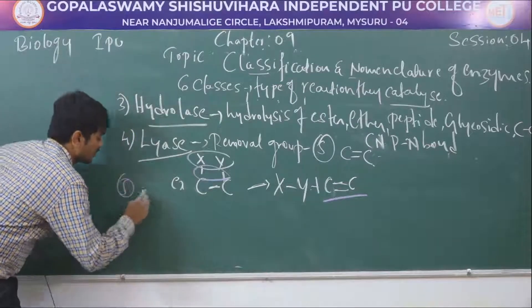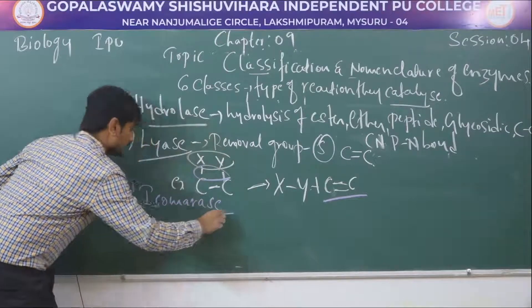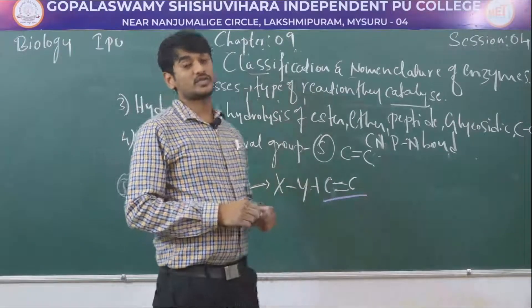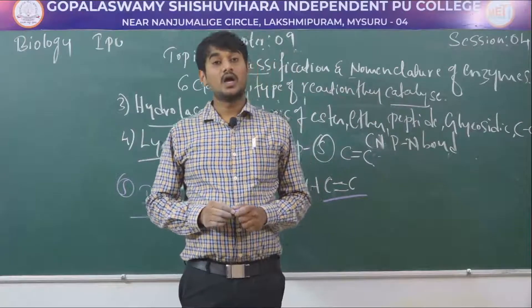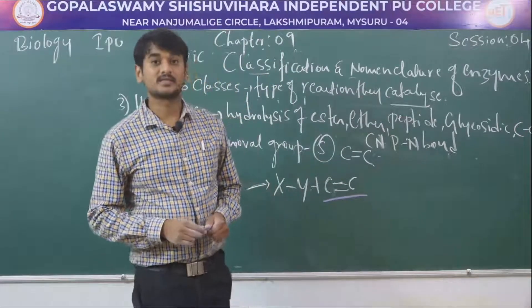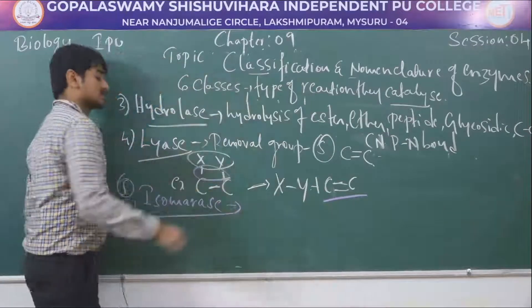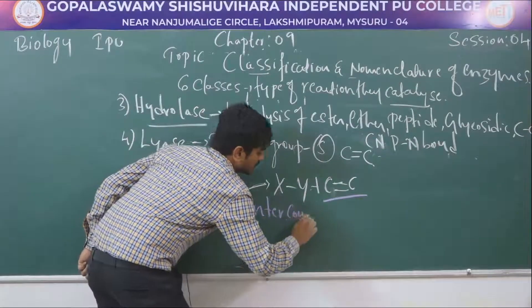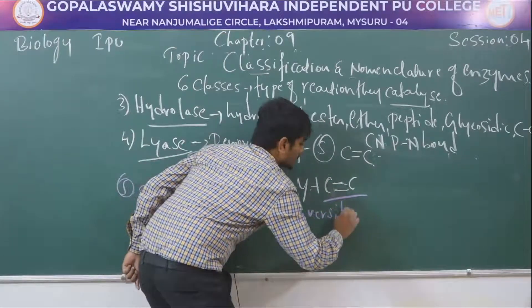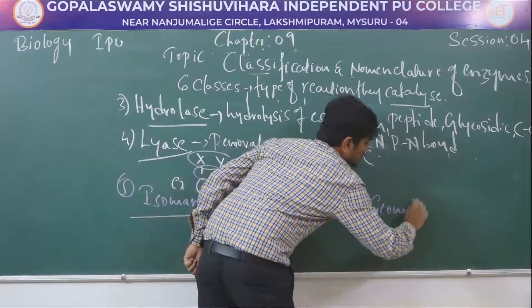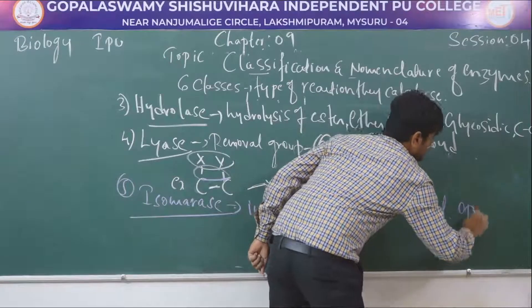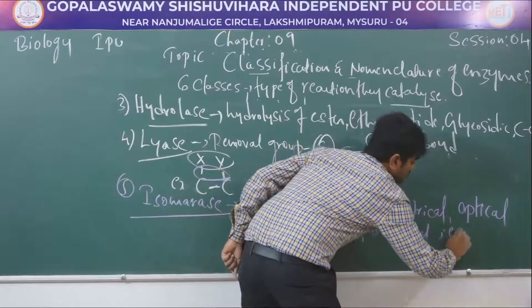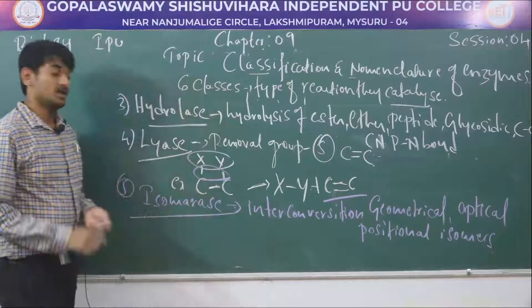The fifth one is isomerase. Isomerase includes all enzymes catalyzing the interconversion of geometric, optical, or positional isomers.